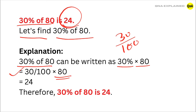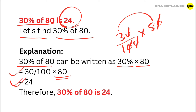Let's solve it. Cancel out the zeros. 3 multiplied by 8 is equal to 24. Therefore, 30% of 80 is equal to 24.